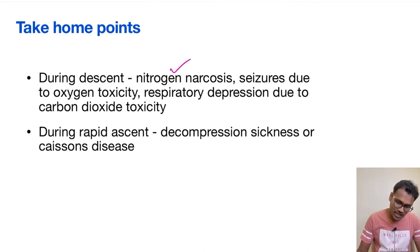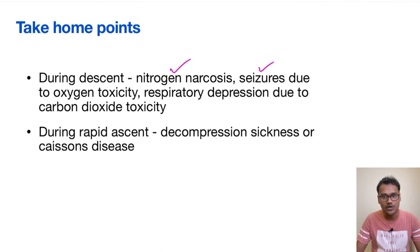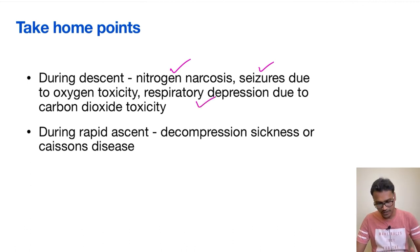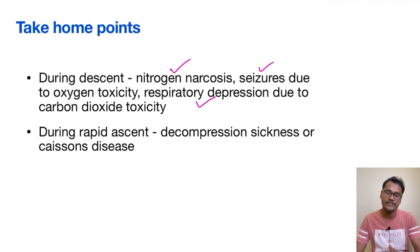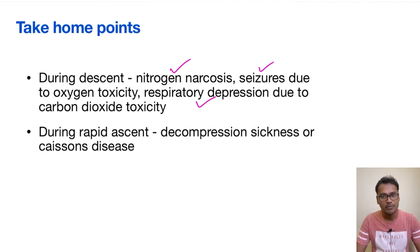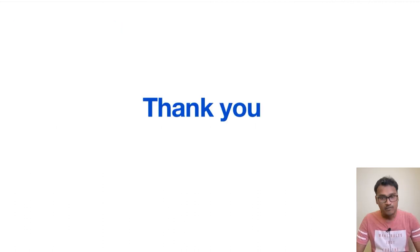Take-home points: during descent, nitrogen narcosis can occur, seizures due to oxygen toxicity can happen, and respiratory depression due to carbon dioxide toxicity occurs. During rapid ascent, caisson's disease occurs with all the features of vessel blockage seen earlier.